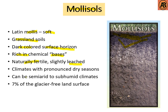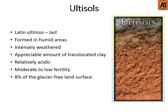Mollisols are naturally fertile, slightly leached, and found in climates with pronounced dry seasons. They range from semi-arid to sub-humid climates and occupy approximately 7% of the glacier-free land surface.